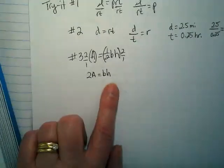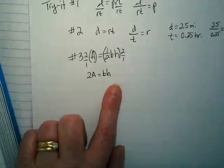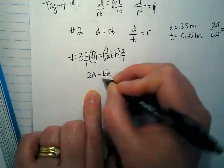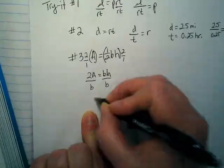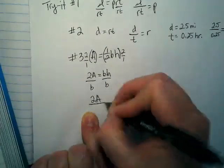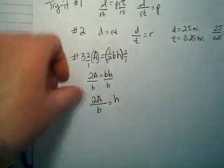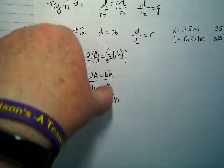It asks us to solve for the height. What do I need to get rid of? The b. And how am I going to get rid of it? Divide it. And so 2a divided by b is equal to the height. So 2 times the area divided by the base equals the height.